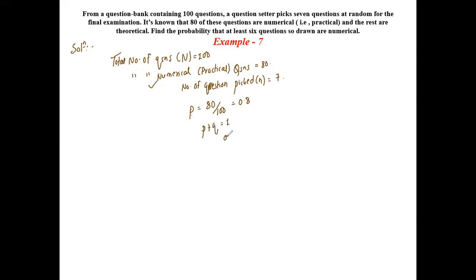Since P plus Q is equal to 1, we have Q value is equal to 1 minus P, which is 1 minus 0.8, equal to 0.2.